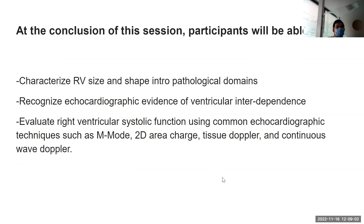At the end, you should be able to recognize RV size and different kinds of basic pathologies. We'll talk about interventricular independence, and hopefully people will be able to recognize what RV volume versus pressure overload looks like. And then of course systolic function using a number of guideline-based techniques. We can talk a little bit about how to do some of them and some of the caveats as well.